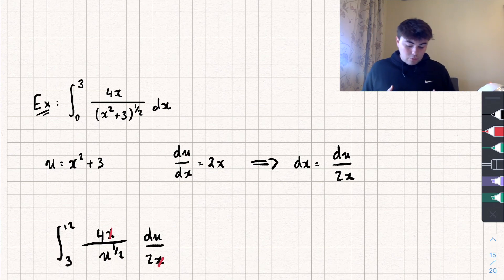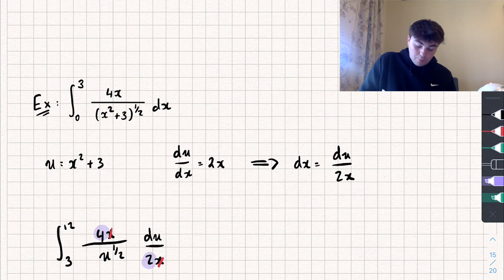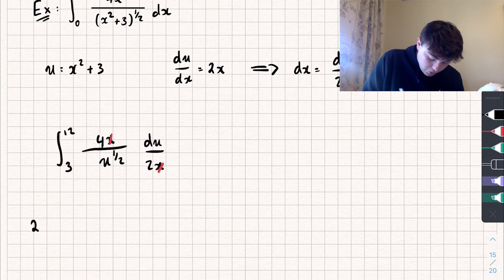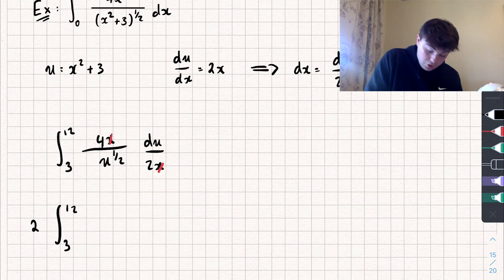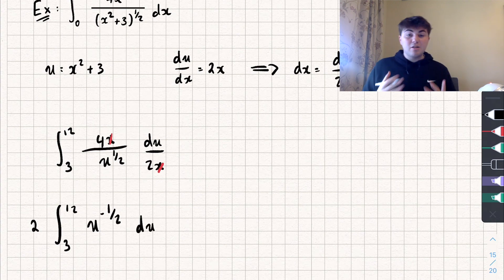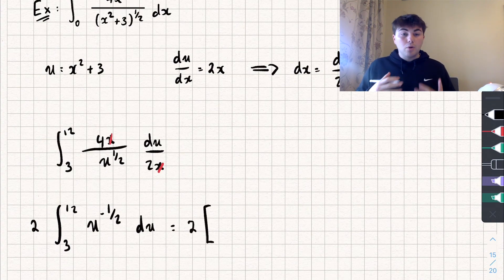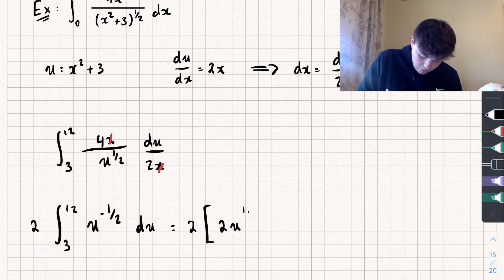Pulling that constant out to the front of the integral, we've got 2 times the integral between 3 and 12 of 1 over u to the power of a half, which I can write as u to the power of negative a half with respect to u. Integrating by adding 1 to the power gives us positive a half, and dividing by a half gives 2. So the result is 2 times 2u to the power of a half, evaluated between the limits of 3 and 12.